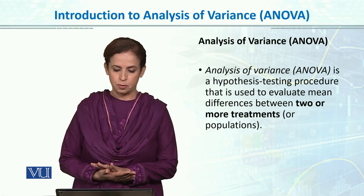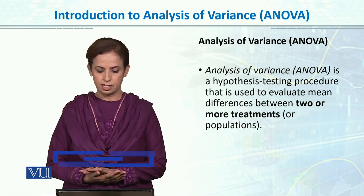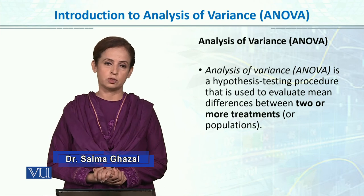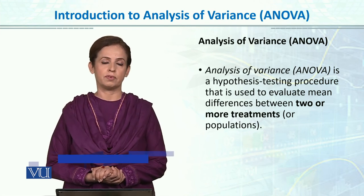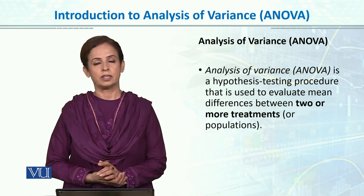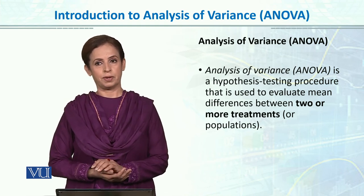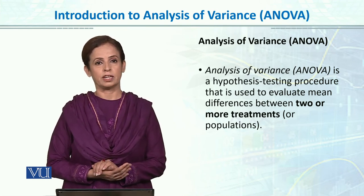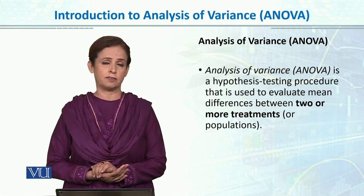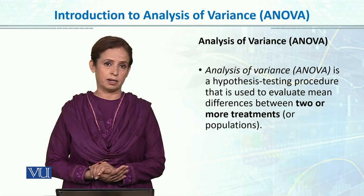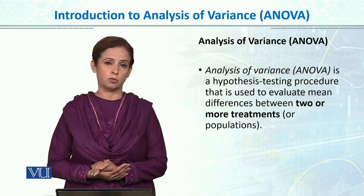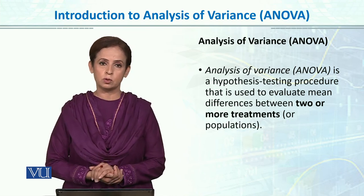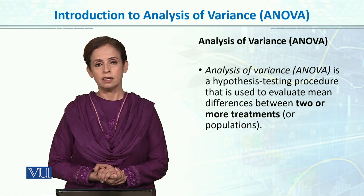Analysis of variance is a hypothesis testing procedure used to evaluate mean differences between two or more treatments or populations. In psychology and social sciences, there are many conditions when we have to compare more than two groups — for example, comparing treatment effects of different therapeutic techniques on depression, different teaching methodologies and their effect on performance, or employee performance across different organizational groups. ANOVA helps us in those cases.